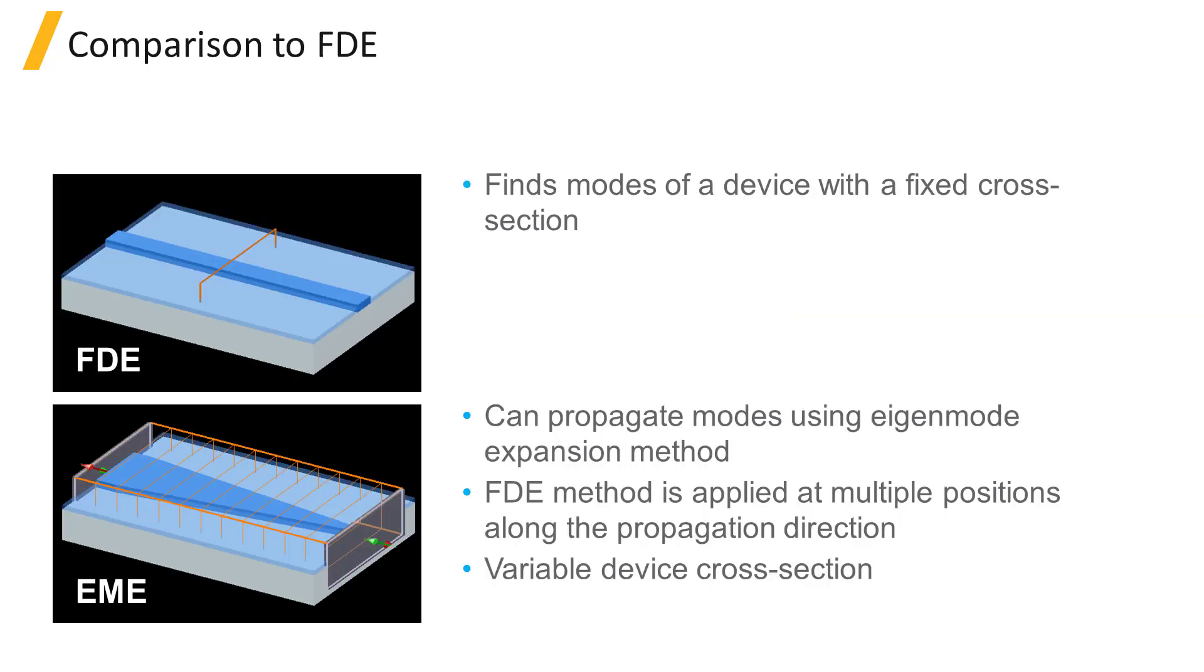FDE finds modes of waveguides or fibers where the cross-section of the structure does not change along the propagation direction. The EME solver, using the eigenmode expansion method, can be seen as an extension of the FDE solver. FDE simply finds the supported modes of devices with a fixed cross-section, such as a waveguide.